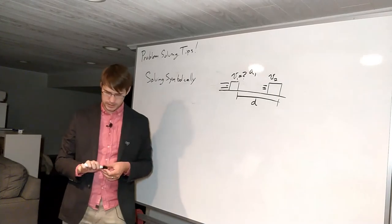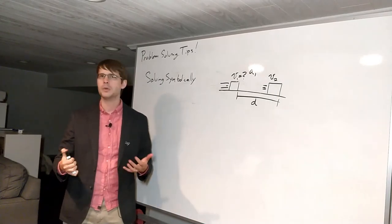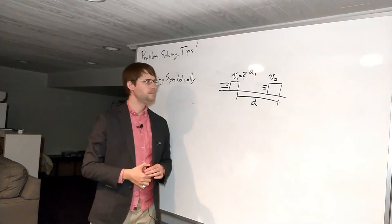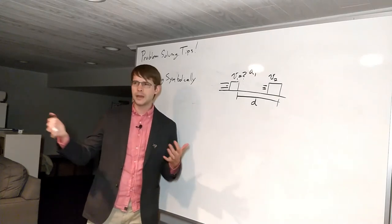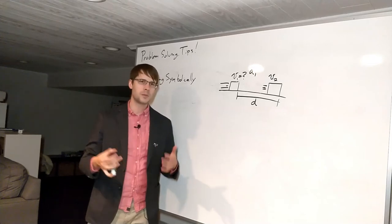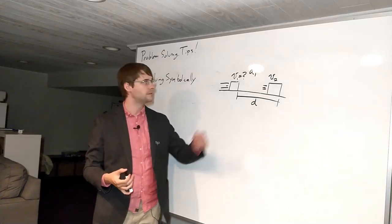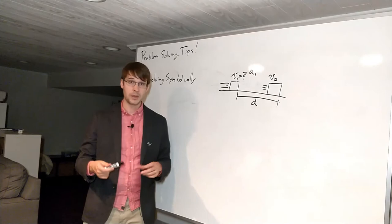That's our unknown, we know the other three, and we know them but we don't know the numbers that they are. So just presume that either somebody else has them or somebody else could measure these and you want to give them a formula that will let them calculate v1. Let's see how we can do that.